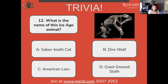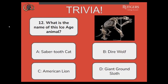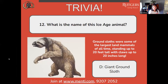Number twelve: what is the name of this ice age animal? Is it A, a saber-tooth cat; B, a dire wolf; C, American lion; or D, a giant ground sloth? The correct answer is D, giant ground sloth. Ground sloths were some of the largest land mammals of all time, standing up to 20 feet tall with claws up to 20 inches long.